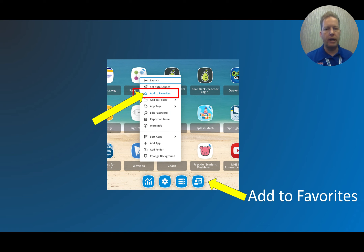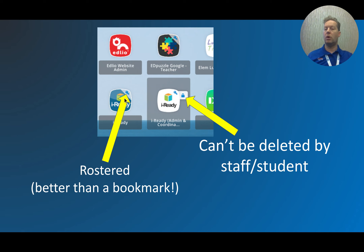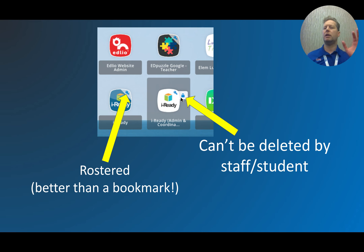When you right-click any icon, there's an 'Add to Favorites' option that places it in the bottom row. There are also indicator icons: a key icon means it's a rostered application — your username and password are stored internally, so kids may not even know their credentials and it works like a password locker. A padlock icon means the icon can't be deleted by staff or student. I recommend locking icons for tools you pay for — we pay over $22,000 a year for iReady, so that one is always locked.